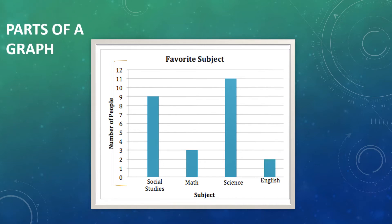There are three important parts of a bar graph. First is the title of the bar graph, which tells us what the bar graph is about.